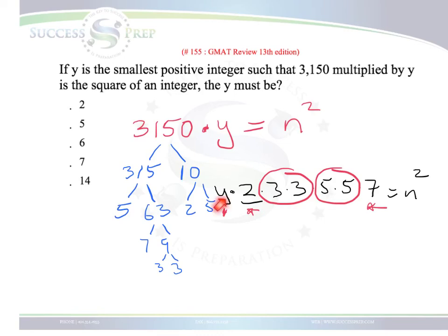Essentially, this y will have to take care of the fact that this 2 doesn't have a pair, so this y has to include that 2. And then this y also has to include a 7 as well. So if you think of a y that needs to include a 2 and a 7 so that this can be a square, it means that the y must be 2 times 7, which is 14. So that's your answer.